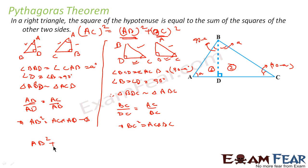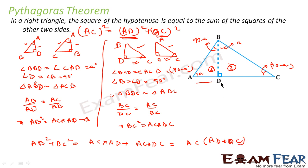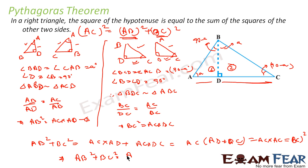Now we add: AB squared plus BC squared equals AC times AD plus AC times DC. AC is common, so this becomes AC times (AD plus DC). AD plus DC is nothing but AC. So this becomes AC times AC, which is AC squared. Therefore, we have proved that AB squared plus BC squared equals AC squared. That is the Pythagoras theorem — a very, very crucial theorem. The sum of the squares of the two smaller sides of a right triangle equals the square of the hypotenuse.